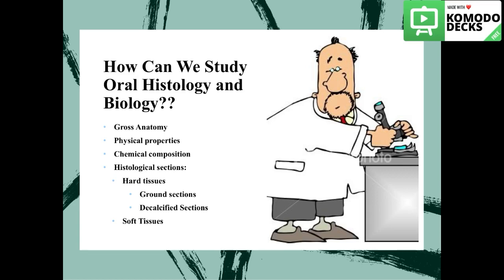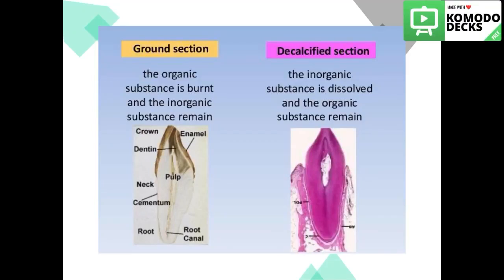We have two kinds of tissues in the oral cavity: the hard tissues and the soft tissues. The hard tissues can be studied using two different kinds of sections: the ground section and the decalcified section. The ground section method burns the organic substance and preserves the inorganic substance. The enamel, which is the hardest tissue of the tooth, is composed of 96% inorganic material, which is preserved in the ground section.